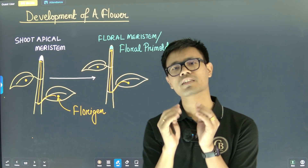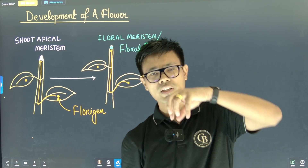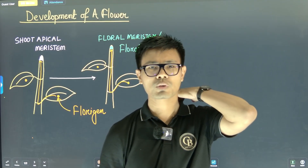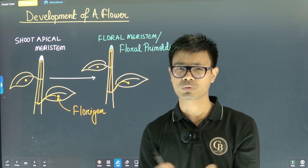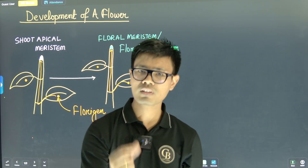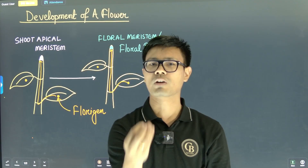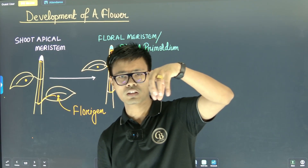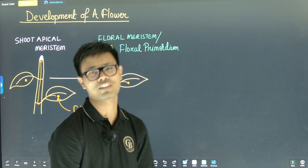If you think about it, the shoot apical meristem changes into floral meristem. They divide cells in different parts of the system, forming organs like leaves, stems, roots. When we particularly consider floral meristem, it divides the plant to make the flower form. But in traditional shoot apical meristem, it does not form a flower.